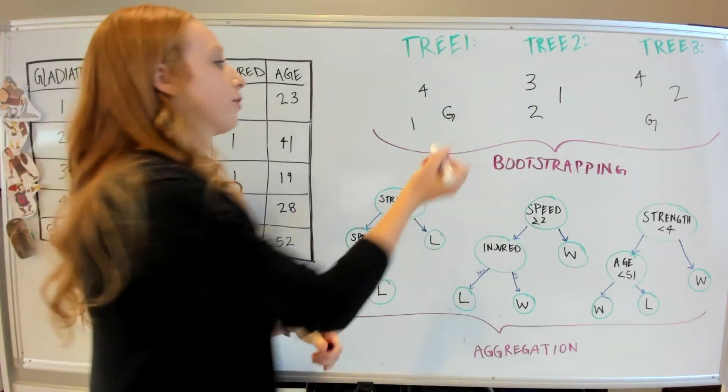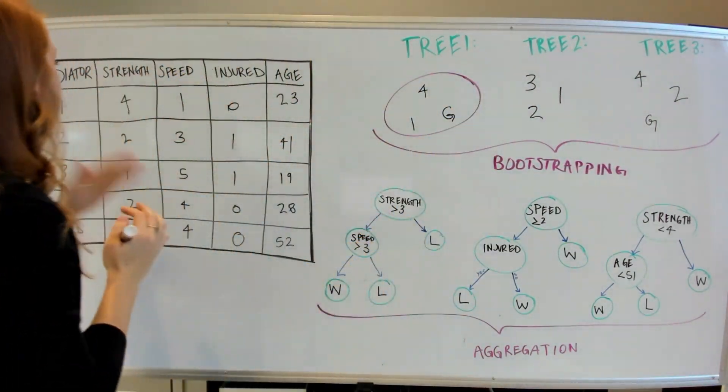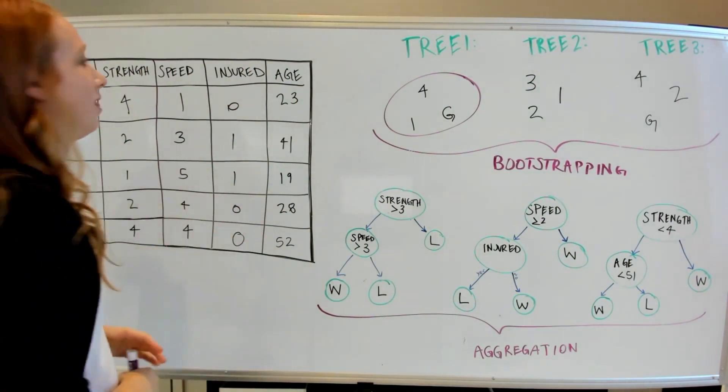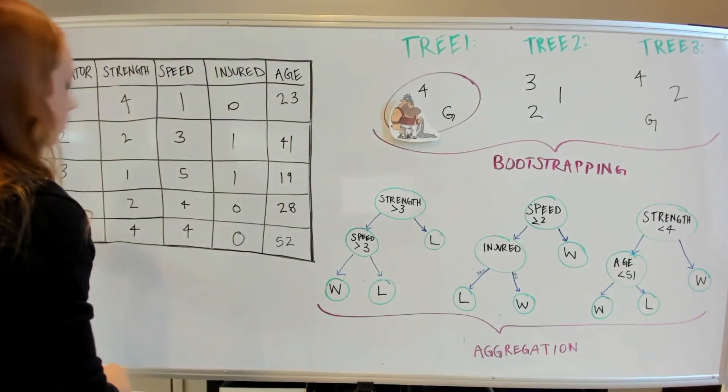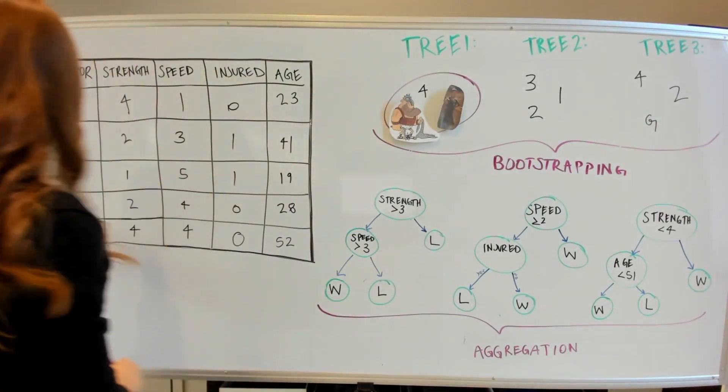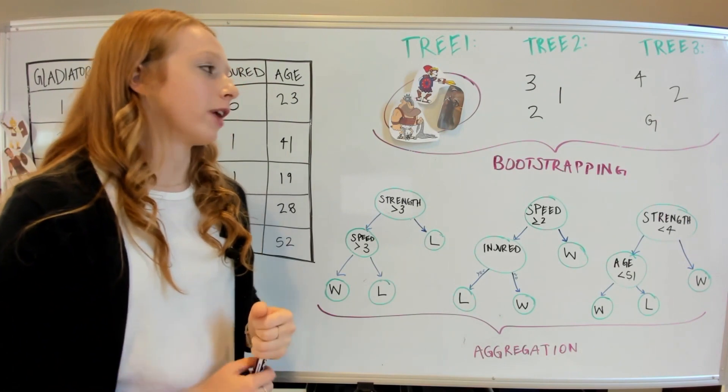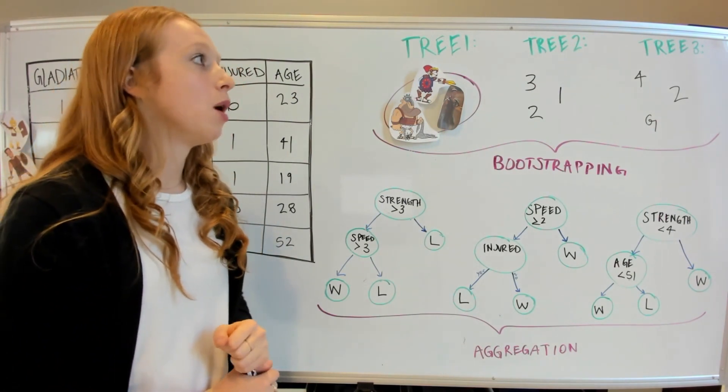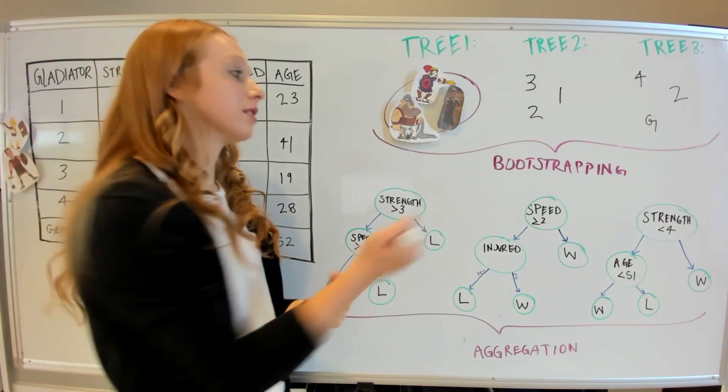With this data, we can build a random forest to determine what makes a gladiator victorious. So let's imagine that we have an arena. We're going to randomly select gladiators from our dataset to put them in this arena. We'll take gladiator 1, we'll take Gerard, and let's take gladiator 4. We'll go through this process of randomly sampling with replacement many, many times. And this process of creating random subsets is called bootstrapping.